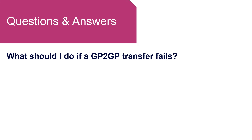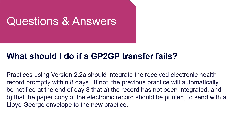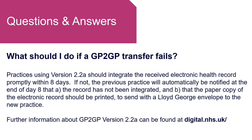What should I do if a GP to GP transfer fails? Practices using version 2.2a should integrate the received electronic health record promptly within eight days. If not, the previous practice will automatically be notified at the end of day eight that a) the record has not been integrated and b) that the paper copy of the electronic record should be printed to send with a Lloyd George envelope to the new practice. Further information about GP to GP version 2.2a can be found at the NHS Digital website. We have included a link to that website within the description of this video.